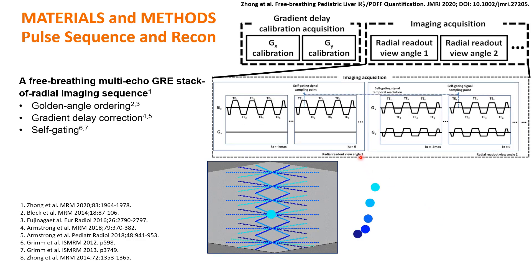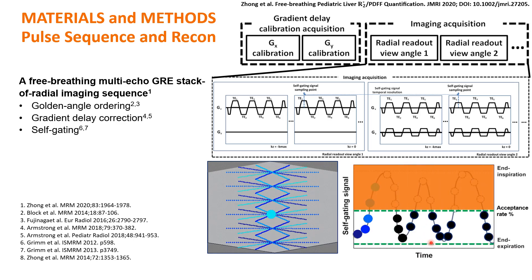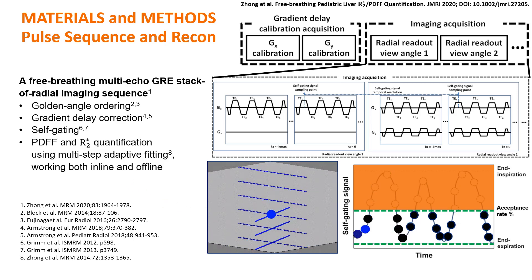The imaging acquisition module contains the self-gating signal sampling inherently. As shown in the illustration, when the K-space data sampling crosses the K-space origin, the data at the origin is sampled to form the self-gating profile. We can then apply an acceptance window to select K-space data acquired near end expiration to reconstruct the radial images. The PDFF and R2-star maps are then calculated using a multi-step adaptive fitting technique.